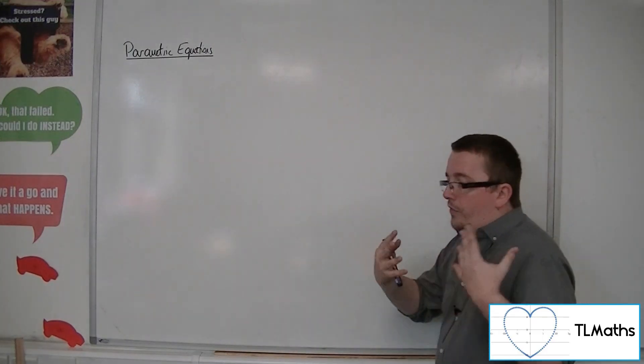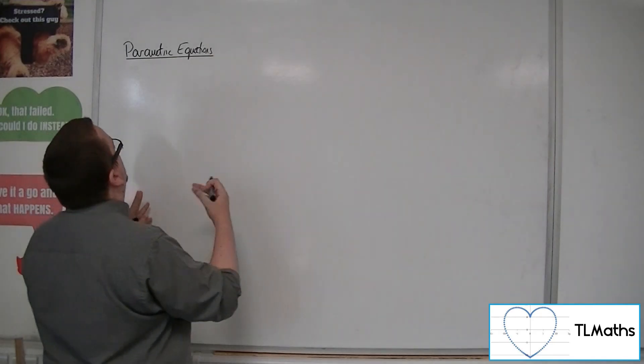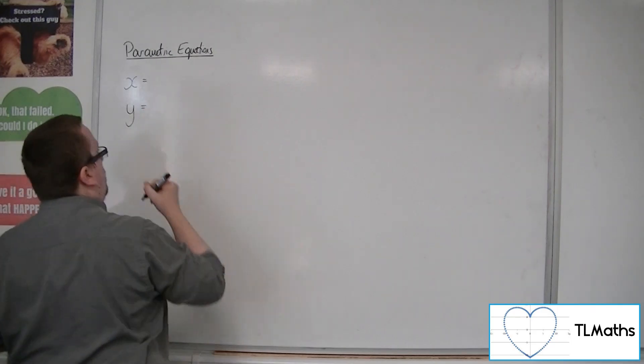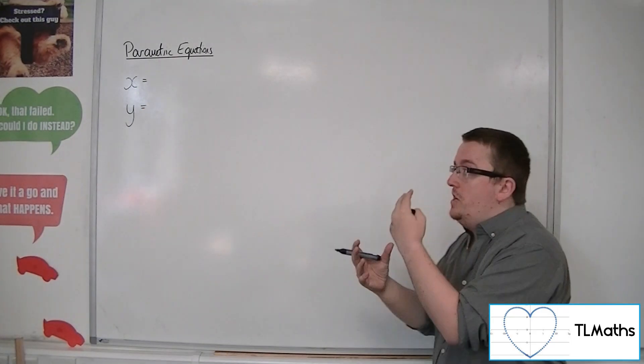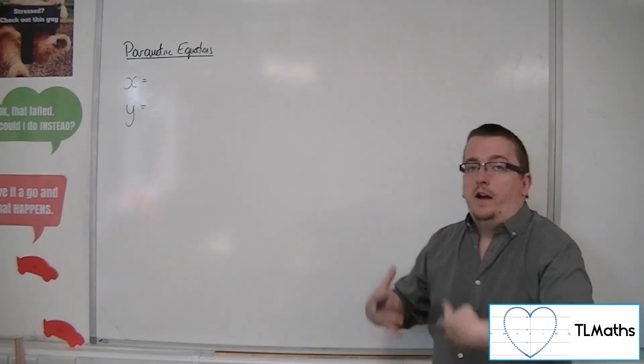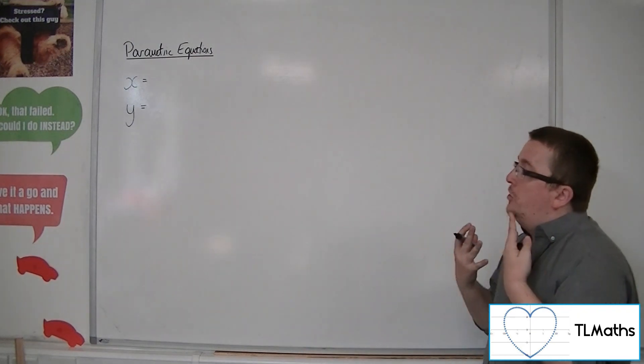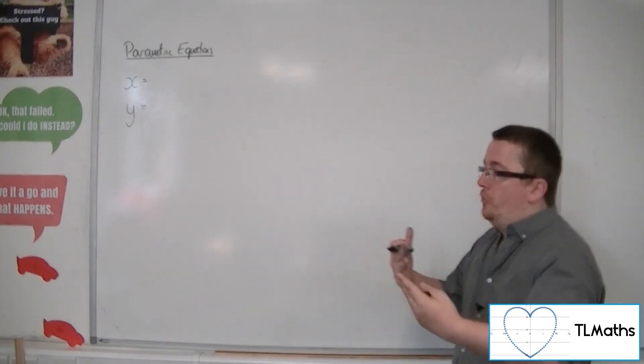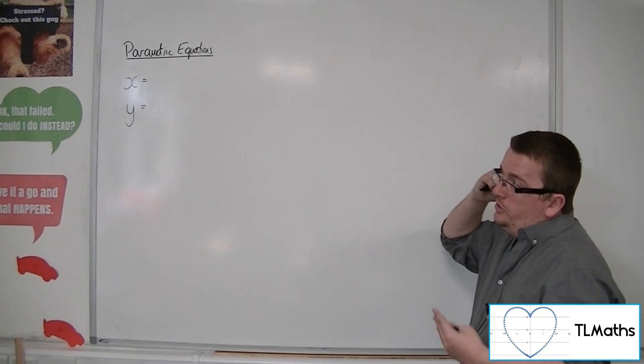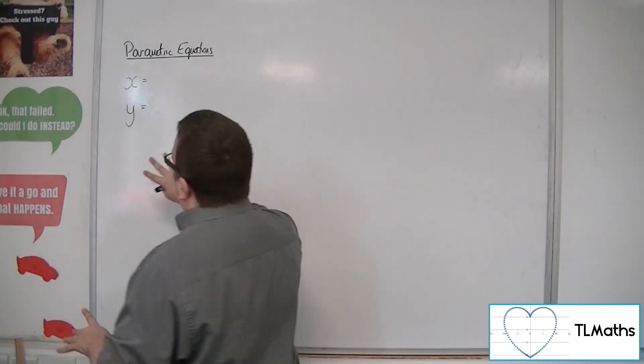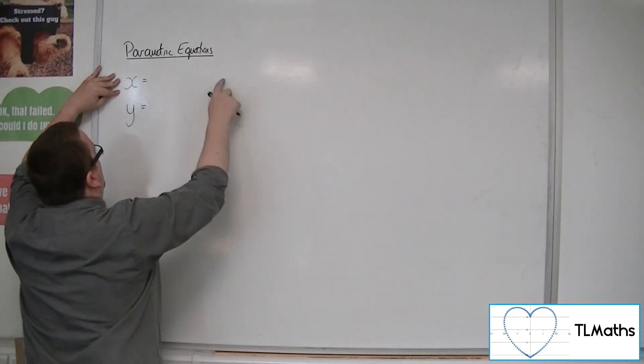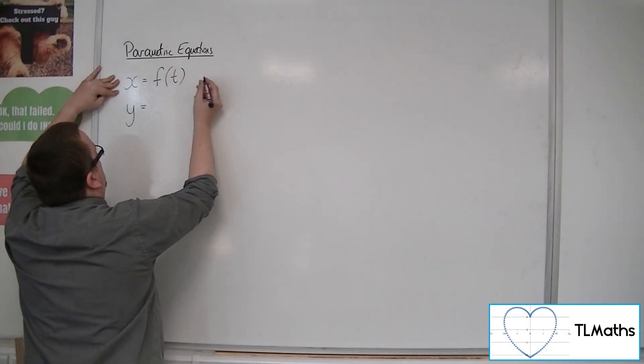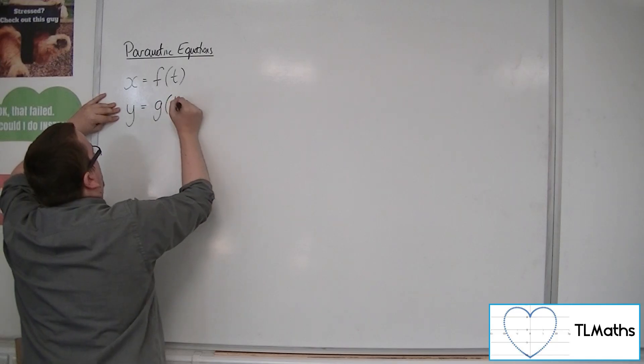So instead of having one equation, we have one equation for x and one for y when we're working in two dimensions. You could branch this out to three-dimensional curves, but that's beyond the realms of this course. We're just going to focus on two dimensions. What we're saying is that x can be some function of something that is changing, some function of t, for example, and y is also some function of t.